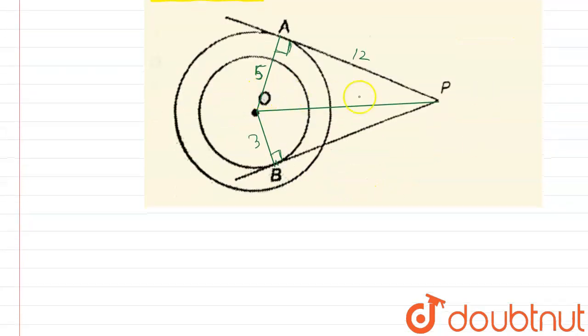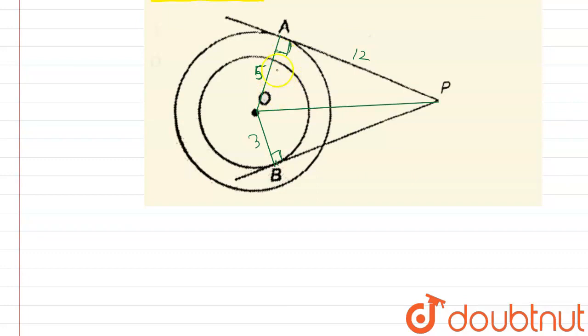So now we see that this is a right angle triangle, then by using Pythagorean theorem we say that OA square plus AP square is equal to hypotenuse square, that is OP square. So here we can write OA square plus AP square equals OP square by Pythagorean theorem.